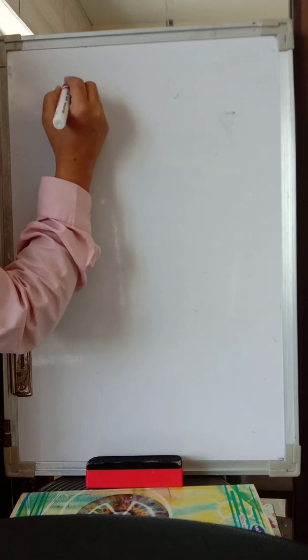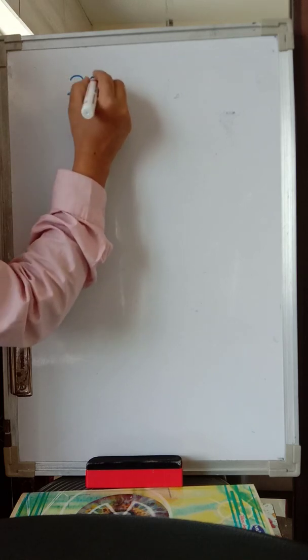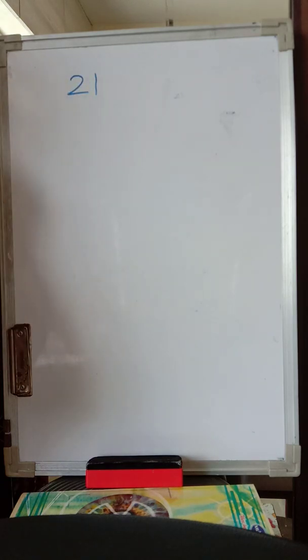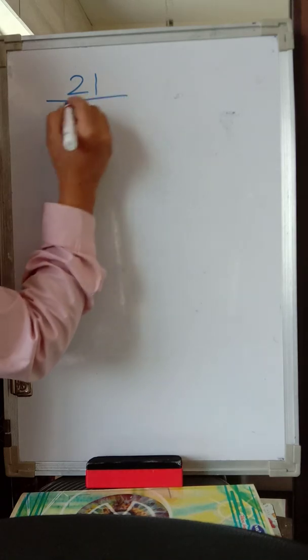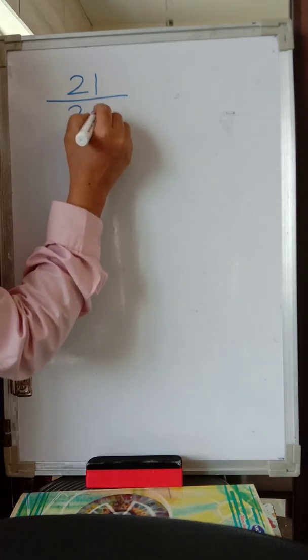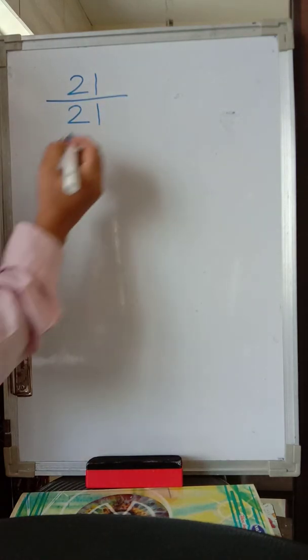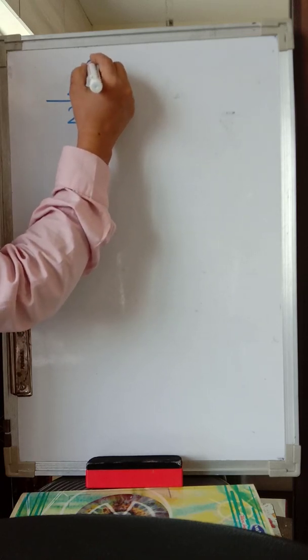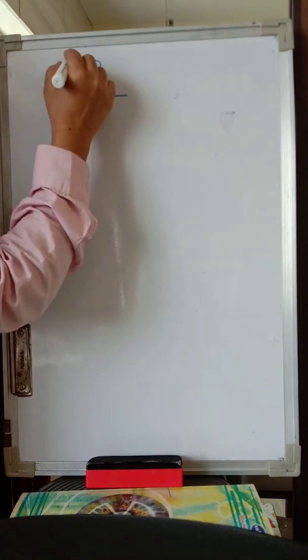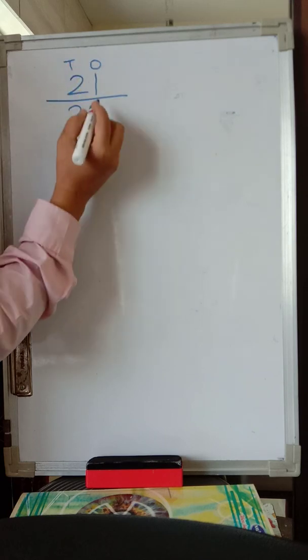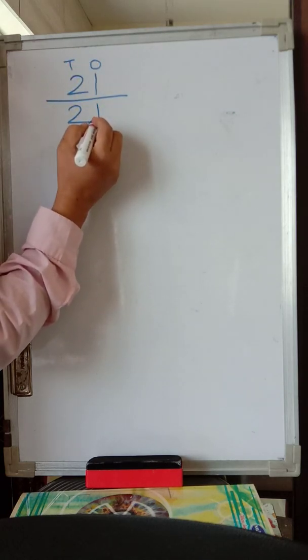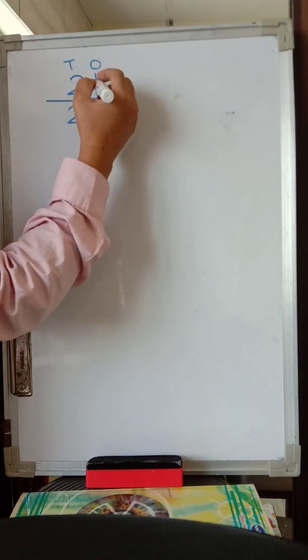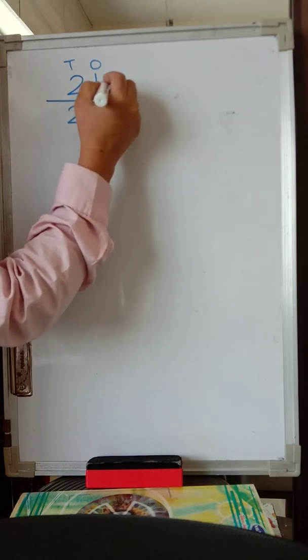You write any two-digit number. Let us start with, for example, 21. This is the base number. You draw a line and again write the same number 21. Now you go on adding this number — this is the units place or ones place, and this is your tens place. So add the number in the units place with the number in the units place over here.